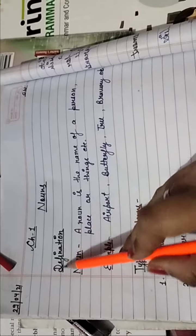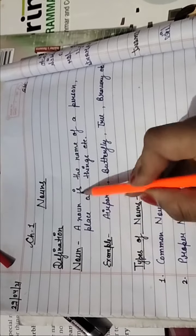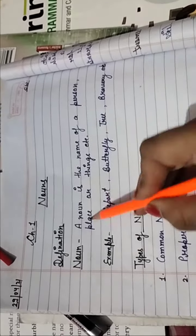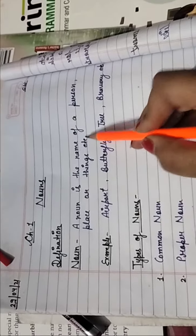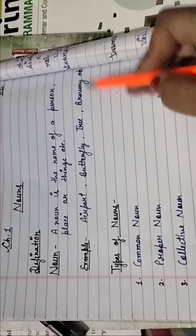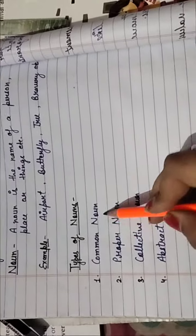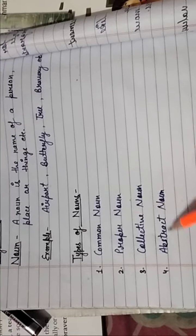हमें हैडलाइन दिकने है. डेफिनेशन, Noun, a noun is the name of a person, place, all things, etc. Example, airport, butterfly, tree, bravery, etc. Types of nouns, common noun, proper noun, collective noun, abstract noun.